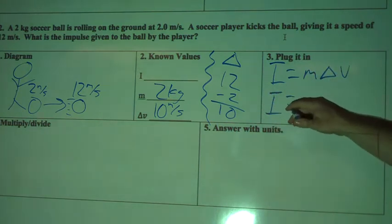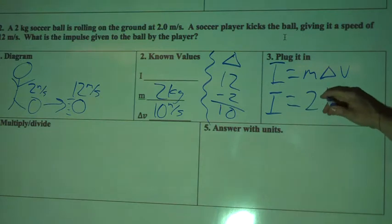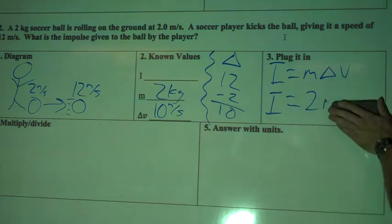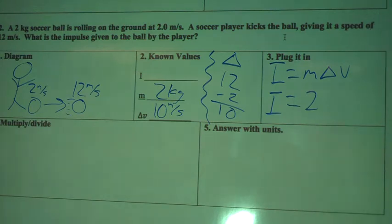I don't yet know my impulse, but I know the mass of this soccer ball is 2kg. And I know that the change in velocity was 10 meters per second. We're going to leave the units out of this just for simplicity.